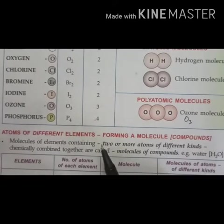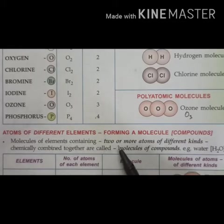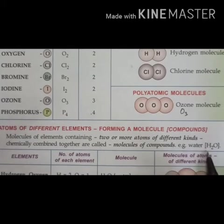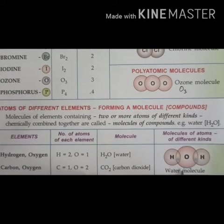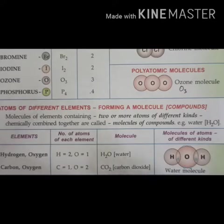Next are atoms of different elements forming a molecule of a compound. Molecules of elements containing two or more atoms of different kinds chemically combined together are called molecules of compounds. For example, two atoms of hydrogen combined with one atom of oxygen give one molecule of water — that is a compound. Similarly, one atom of carbon and two atoms of oxygen combine to give one molecule of carbon dioxide.